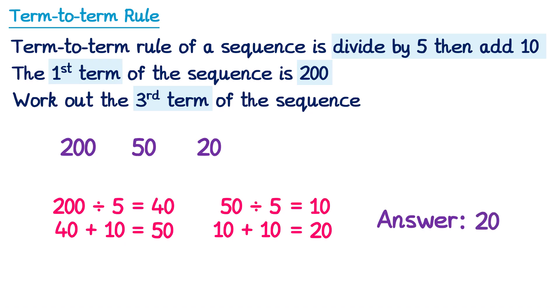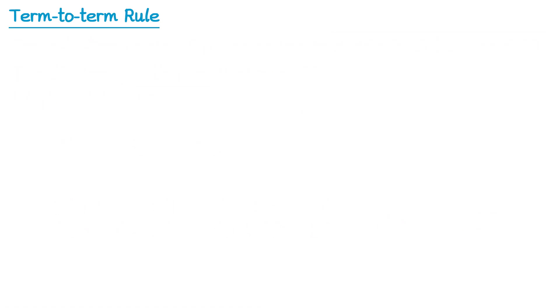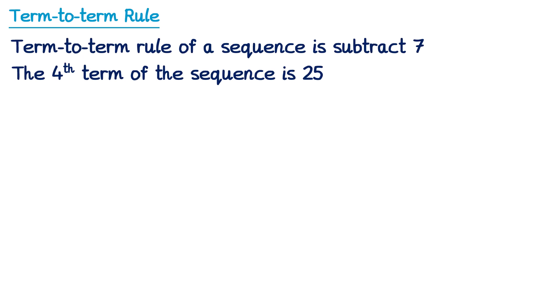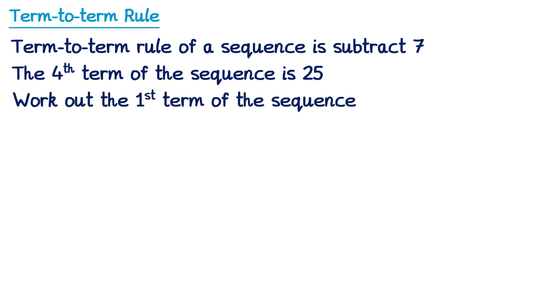Now let's have a look at a more difficult question. In this question, the term-to-term rule of a sequence is subtract 7. The fourth term of the sequence is 25, and we need to work out the first term. So unlike all of the previous questions, we've not been told the first term. In fact, we're going to work out the first term. In this one, we're told the fourth term is 25.